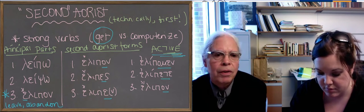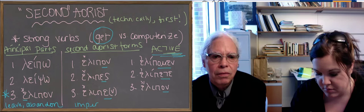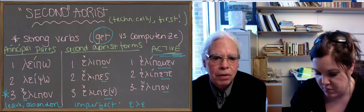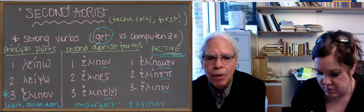So that's the sign of the aorist active indicative, that you've got lip as the stem, and it has endings that don't have the S-A anymore.